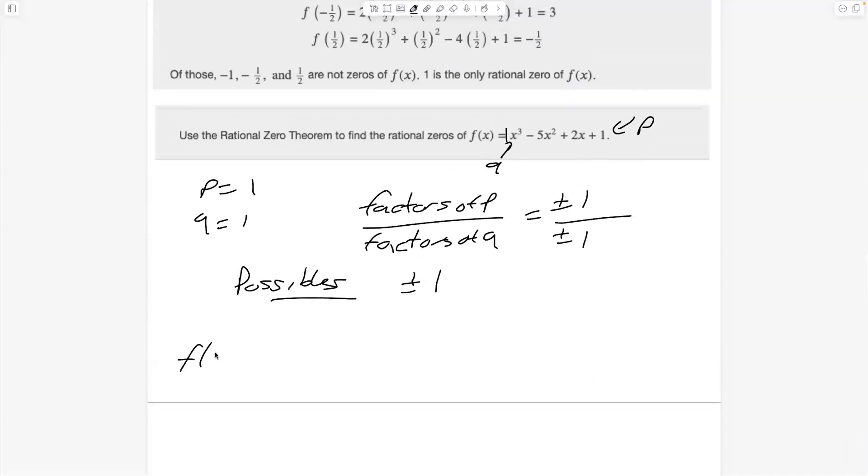I would start with one. So when you're plugging in one, all you're really doing is adding all the coefficients because one to any power is just one. One minus five is negative four, negative two, plus one. I think we get negative one. All right, one minus five. Yep, I think that's right.